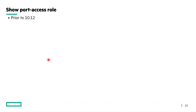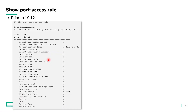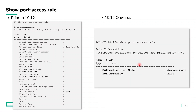Next is the enhancement in the show port access role show command. Prior to 10.12, this show command displays the full role information, including role parameters not assigned with any values. From 10.12 onwards, it will display only the role parameters assigned with a value, thereby reducing the length of the show port access role show command output.